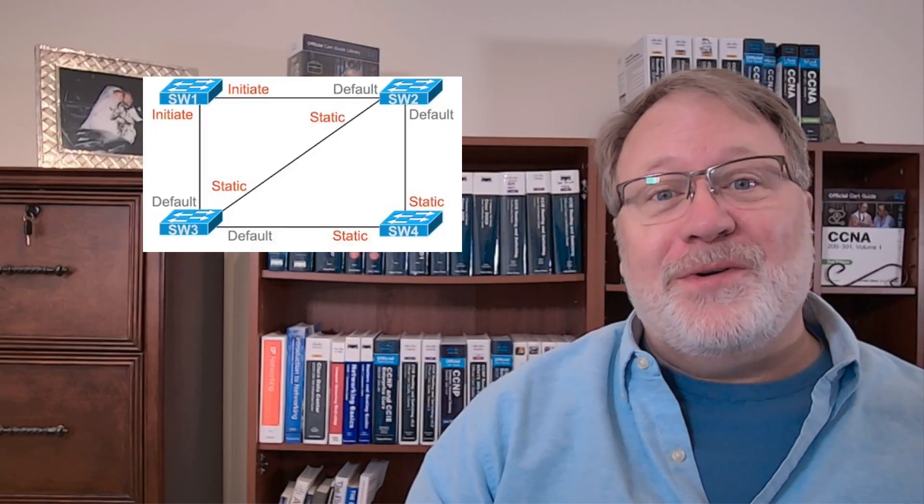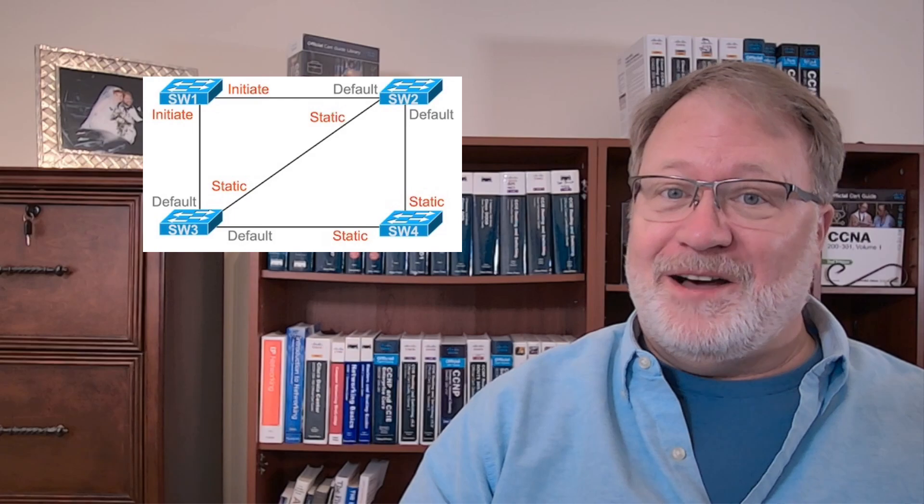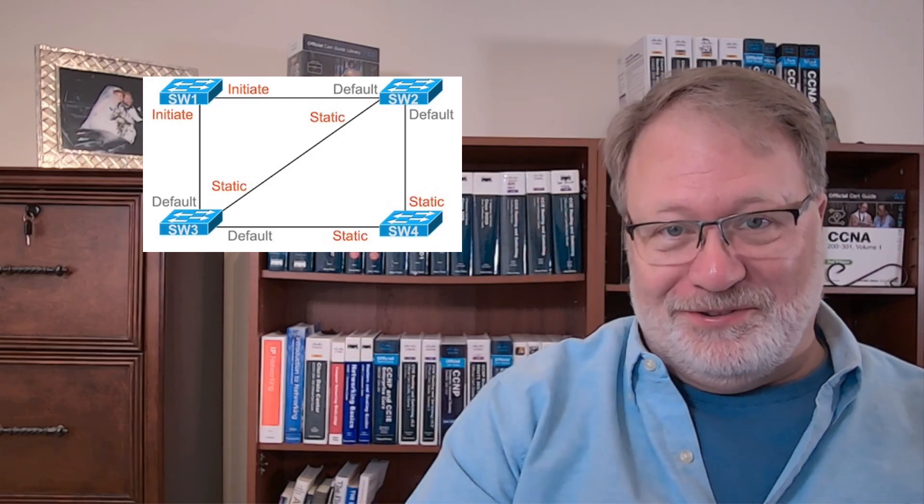To configure VLAN trunking, you have to think about the devices on both ends of the link. In this next lab, you'll have five of those links to think through. Let's jump in.